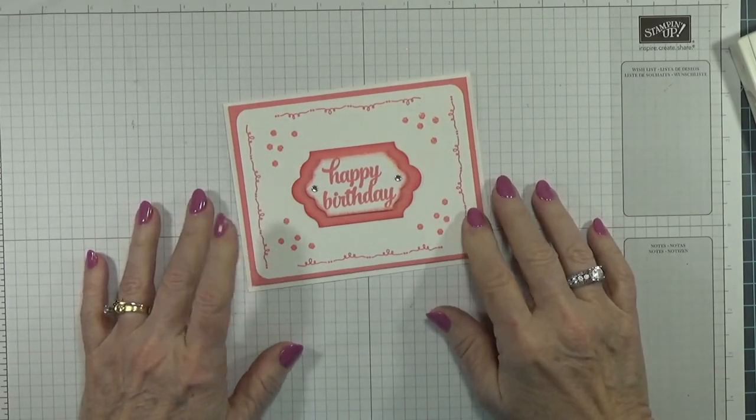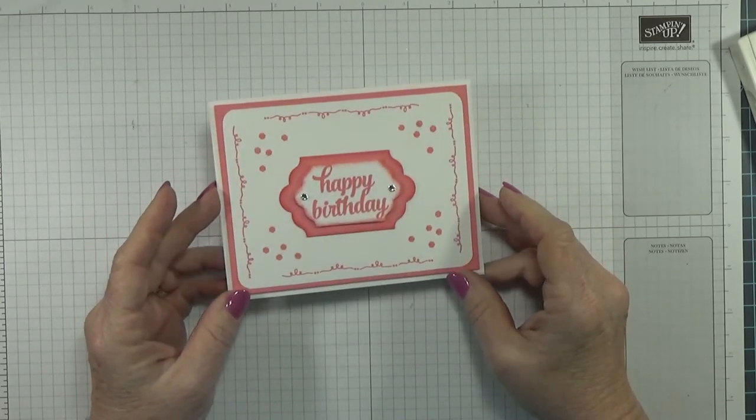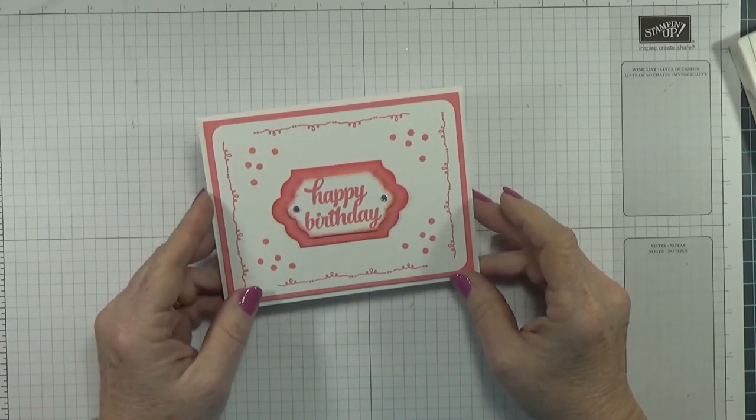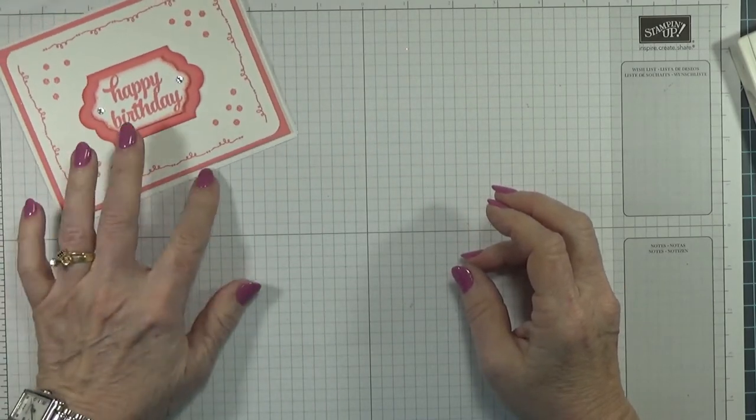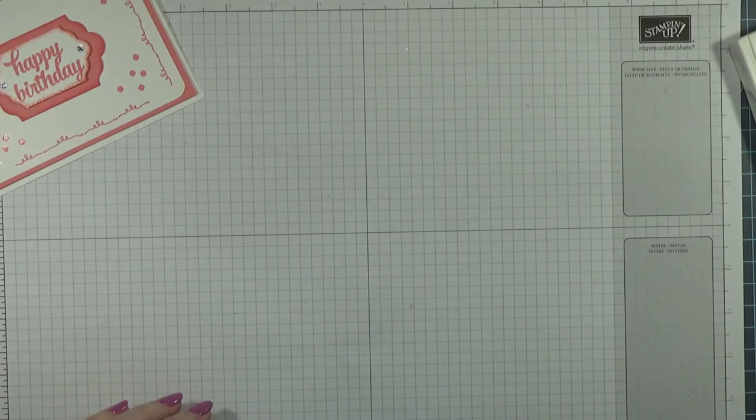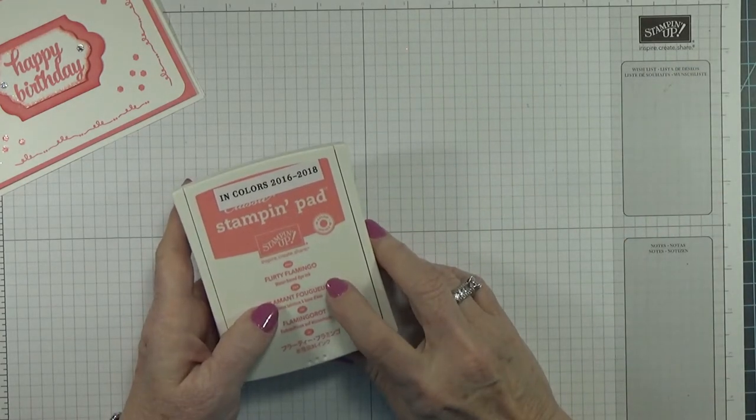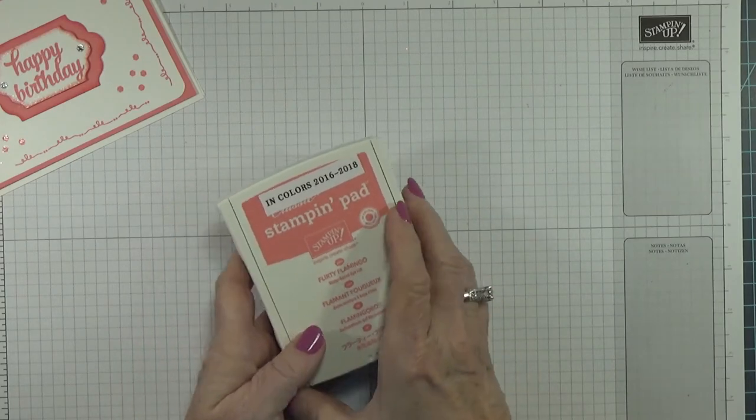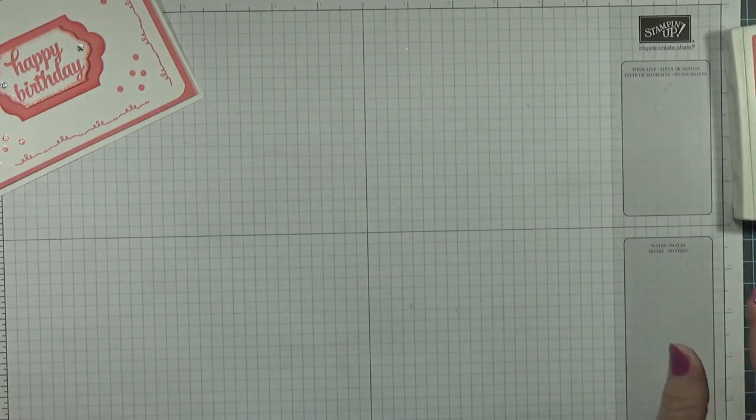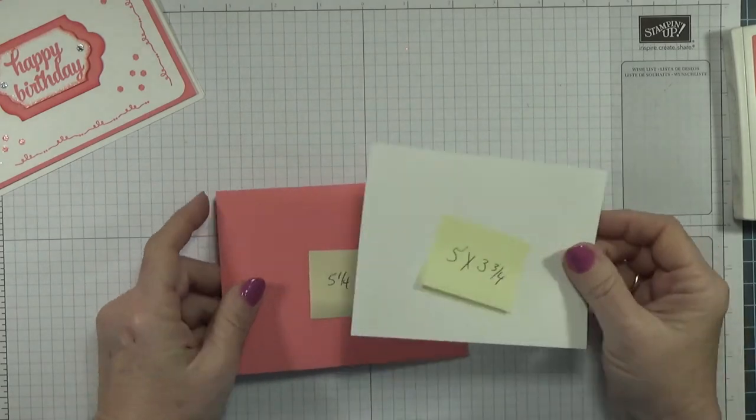This is my sample card that I kind of threw together, so let's get started. It is using some of the new in-colors, or one of the new in-colors which is Flirty Flamingo. She told me she loved this color, so that's what I'm going to use for her card.